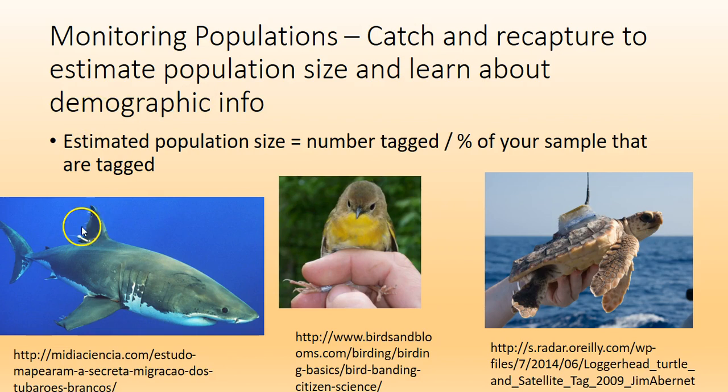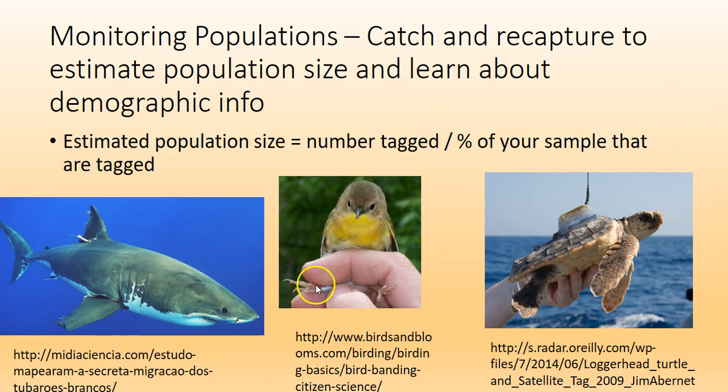You estimate population size by looking at the number tagged and then how many tagged individuals you get back when you resample. If you tag 10 individuals and get all 10 back tagged, you've tagged the whole population. If you tag 100 birds and catch another 100 with none tagged, there are probably a lot of birds.